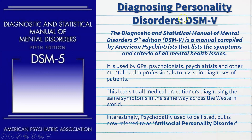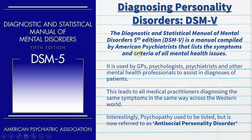Diagnosing personality disorders is inherently difficult, but we use the Diagnostic and Statistical Manual of Mental Disorders in its fifth edition — the DSM-5. This is a manual compiled by the American Psychiatrists Association that lists the symptoms and criteria of all mental health issues. It is used by GPs, psychologists, psychiatrists and other mental health professionals to assist in diagnoses, and also in the legal area. This leads to all medical practitioners diagnosing the same symptoms in the same way, ensuring consistency, especially in the Western world.